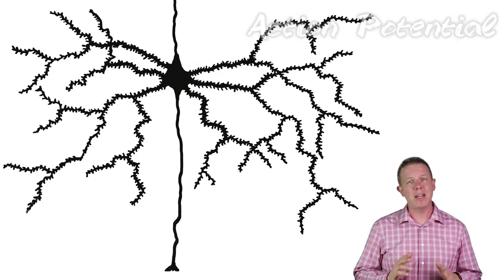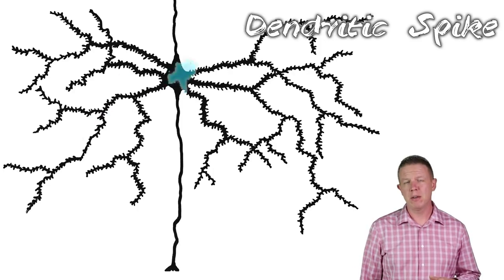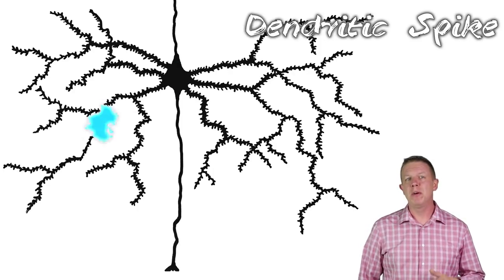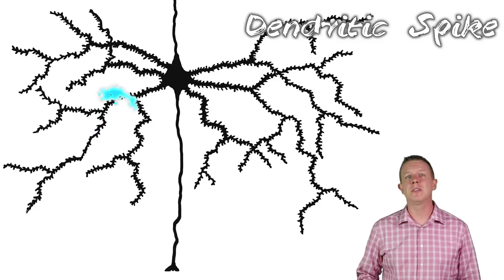But there's another spike happening inside the neuron called a dendritic spike, and it never even leaves the cell. But it makes a huge difference to the cell's firing behavior.